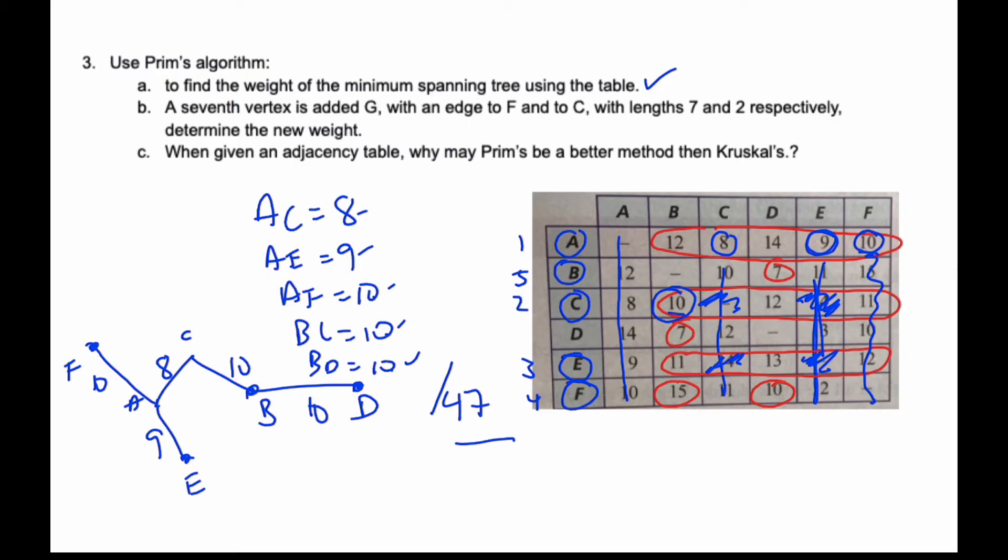Now part B says a seventh vertex is added, G, with an edge to F and to C. Here is G. It has an edge to here and an edge to here. This to C is 2 and to here is 7. This is a cycle, so this is not an actual spanning tree. I want to know how I'm going to affect what's going on.